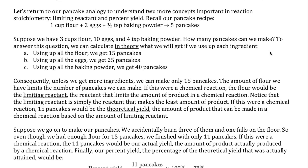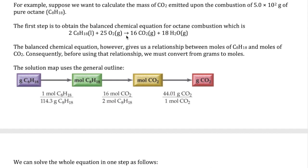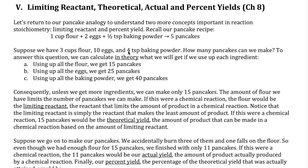Hi everyone. In prior videos we have talked about using balanced equations and molar masses to help convert between the mass of one species to mass of another in a chemical reaction. The reaction we looked at before has exactly the right quantities of each reactant we need — for example, in the combustion of octane reaction shown here, our example has exactly two moles of octane and 25 moles of oxygen gas. In real life this is often not true.